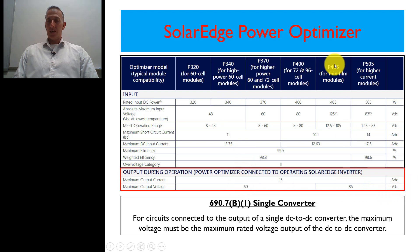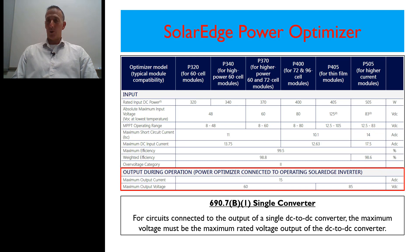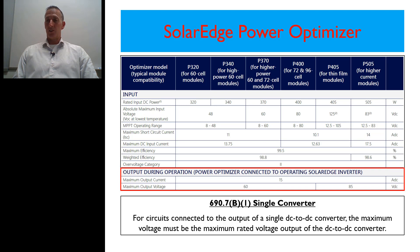If you go up to the next ones — the P405 or the P505 — those jump up even higher to 85 volts DC. So if you have that one single optimizer or converter, if you had just one of those in that circuit, the maximum rated voltage would be the output — either 60 or 85 volts depending on what you're using. That's how you determine the maximum rated voltage for that circuit in relation to the requirements of the 2017 National Electrical Code.